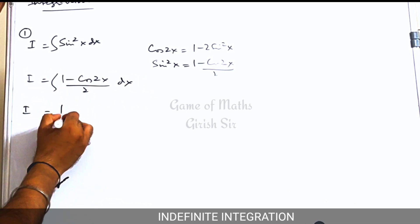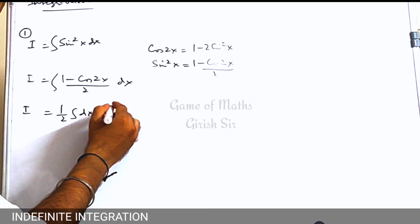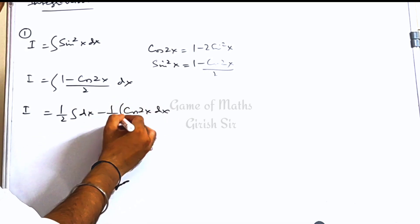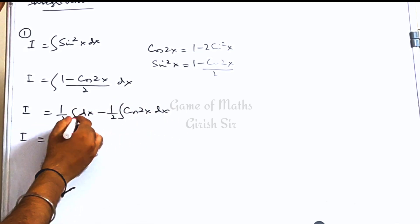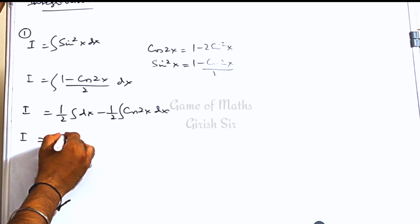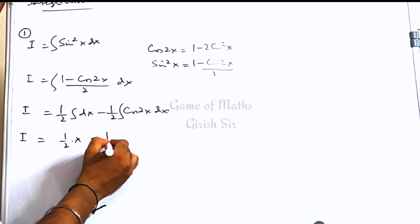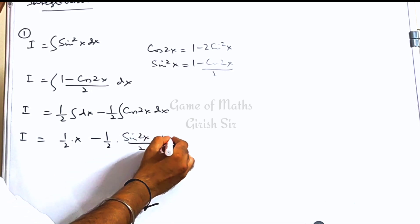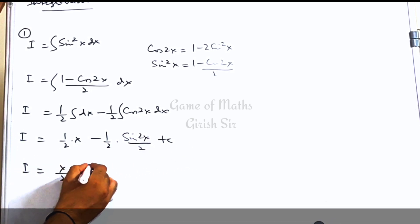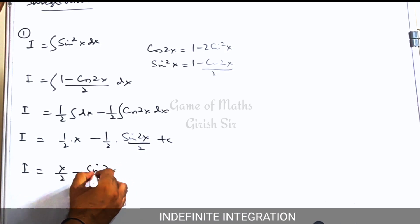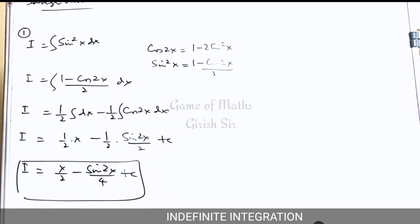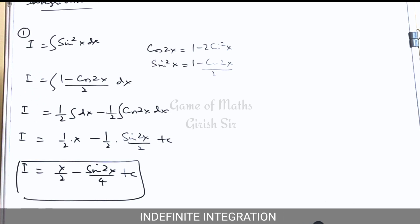Now you can split the integral into two parts. The first integral would be x/2, and the second would be sin 2x divided by 4. So this is the answer to this question.